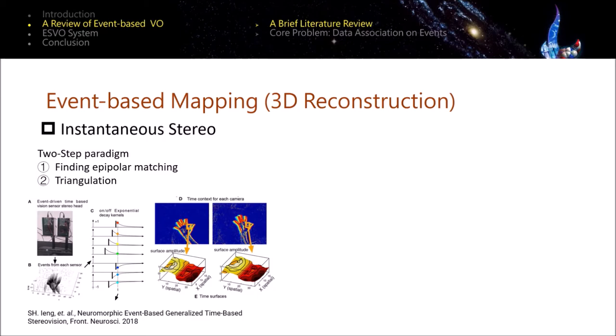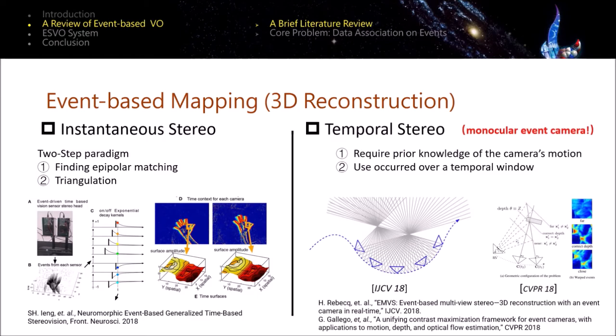The second category is called temporal stereo. The majority literature around this category go to the monocular case. This kind of method assumes to have prior knowledge of the camera's motion, and leverages events occurred over a temporal window to determine the 3D location of structures by finding the maximum in the disparity space image through either voxeling in the discrete space or in a way of continuous optimization.